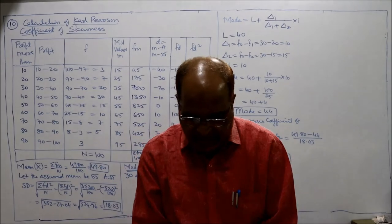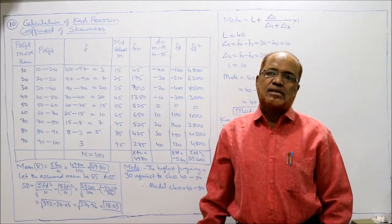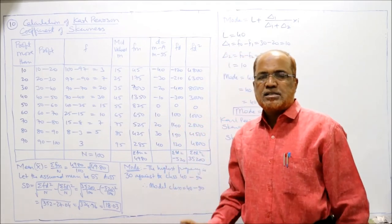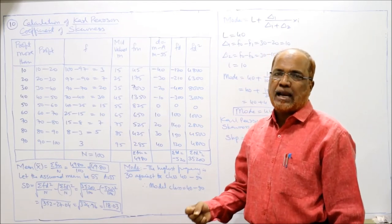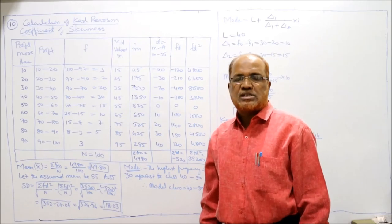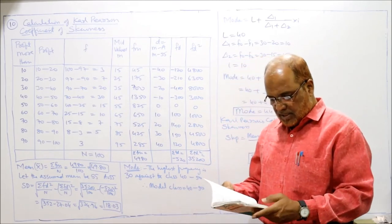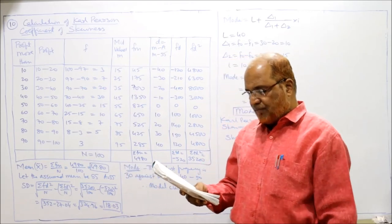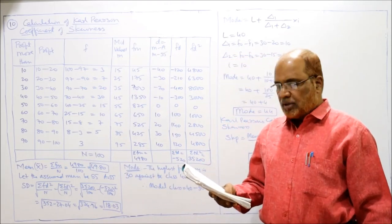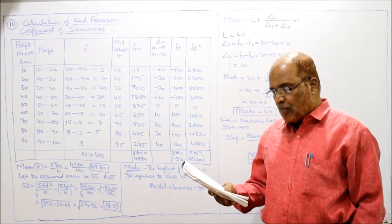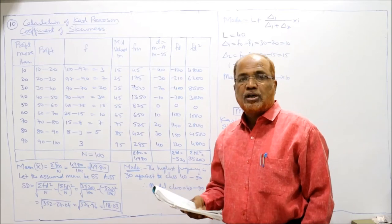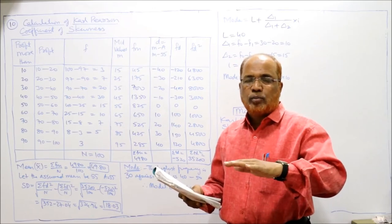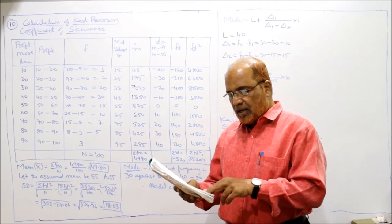Now we start problem number 10, the last problem on Karl Pearson's coefficient of skewness. Calculate coefficient of skewness for the frequency of profit earned by 100 partnership firms during a particular period. Profits are given as cumulative 'more than' type: more than 10, more than 20, more than 30, etc. We must first convert cumulative frequency into simple frequency.